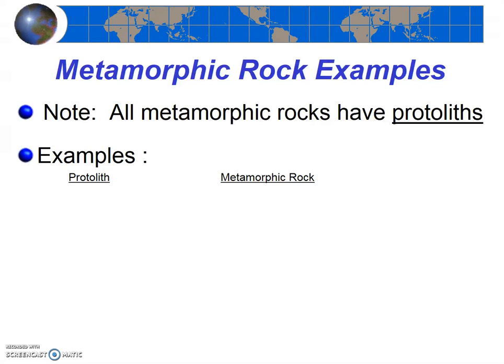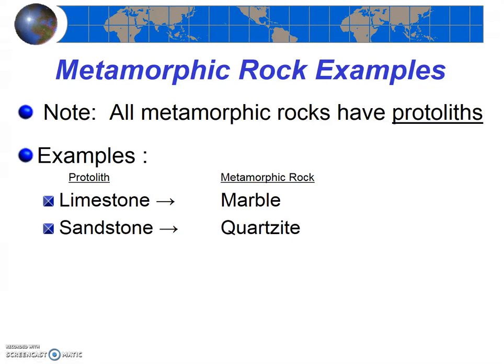I'm going to give several examples of a protolith and its metamorphic rock pair. Limestone, which is a sedimentary rock made out of shells, when exposed to high temperatures basically turns into marble, which is a crystalline metamorphic rock. Similarly, sandstone is a detrital sedimentary rock made out of pieces of sand that can turn into the crystalline metamorphic rock quartzite when exposed to very high temperatures.